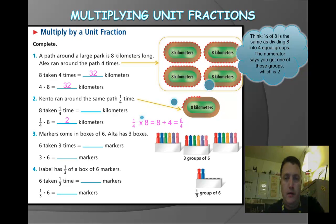And in each of those groups, if you can picture those apples, if I took my 8 apples and put them in 4 equal groups, I'd have 2 in each group. Because I'm getting 1 fourth of those, I get 2 apples. And in this case, 1 fourth of 8 kilometers is 2 kilometers. Down here it says markers come in boxes of 6. Alta has 3 boxes. So she's got 3 groups of 6. Well, 3 times 6 is 18. So 6 taken 3 times is going to be 18 markers.